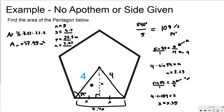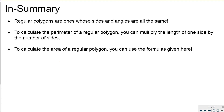I wouldn't really expect you to have to do those regularly, but I just wanted to show you in case something like that came up. So that's it — regular polygons are ones whose sides and angles are all the same. To calculate the perimeter, multiply the length of one side by the number of sides. To calculate the area, use one half the apothem times the perimeter, or one half the apothem times the side length times the number of sides. Thanks for watching and I'll see you in the next one.